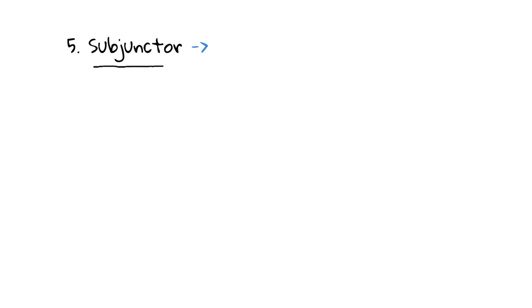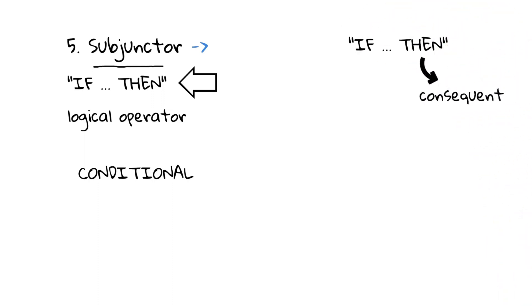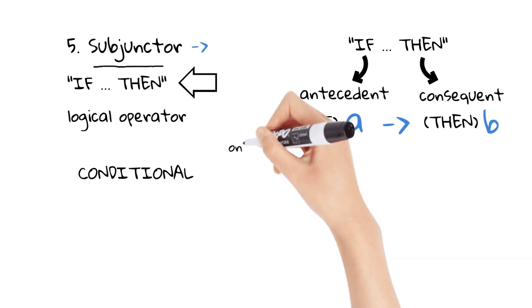Five, the subjunctor, or if, then. The subjunctor is a conditional operator, which means that when a condition is met, it will lead to some specific result. It combines elementary propositions by making one a consequence of the other. The most common linguistic expression of the subjunctor would be, if something, then something else. The effect, or consequence, is called the consequent. The cause is called the antecedent. Therefore, based on an antecedent A, we will get a consequent B. Or, in other words, if A, then B. A subjunction is false only when the antecedent is true and the consequent is false.